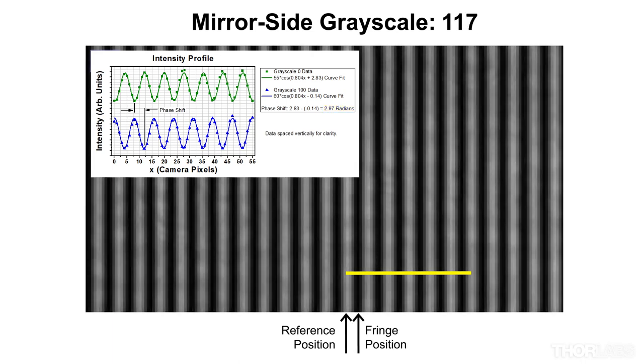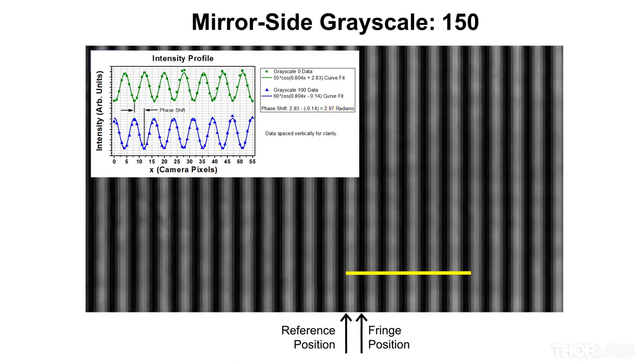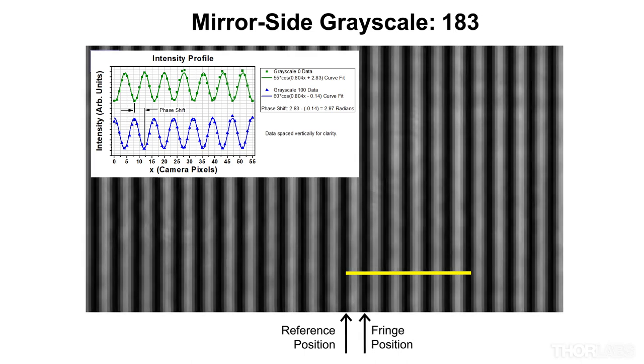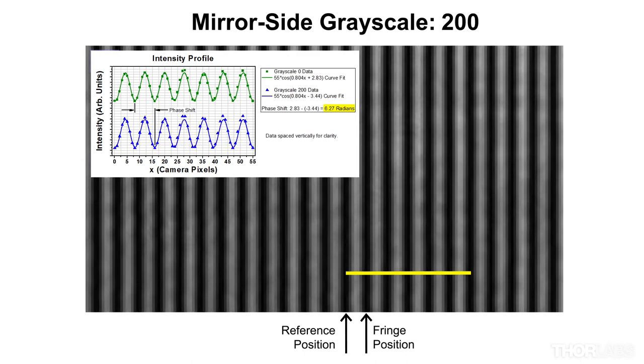And for a grayscale value of 200, the difference between the phase of this curve and the reference curve is 6.27 radians. This means a grayscale value of 200 will provide a phase delay of 6.27 radians relative to a grayscale value of 0.